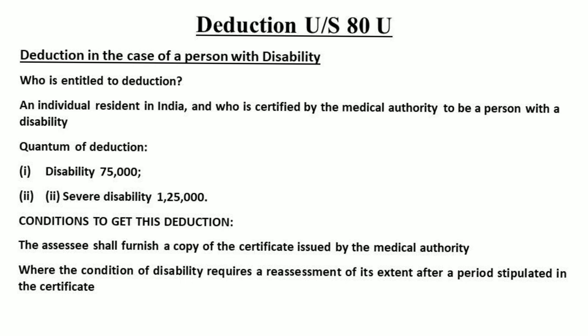For severely disabled, one lakh twenty-five thousand rupees can be claimed. The assessee shall furnish a copy of the certificate issued by the medical authority. This deduction under Section 80U is based on that certificate from the medical authority.